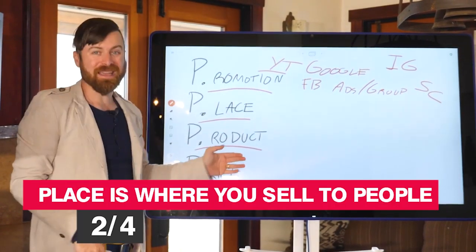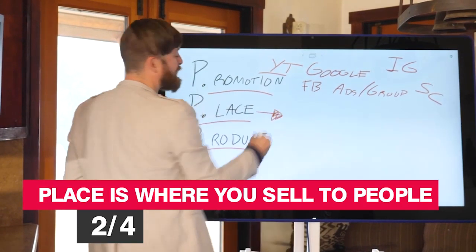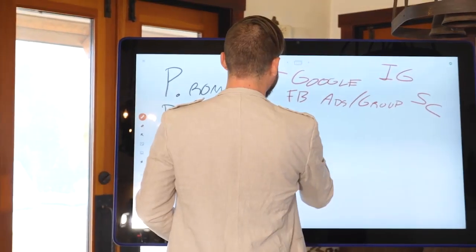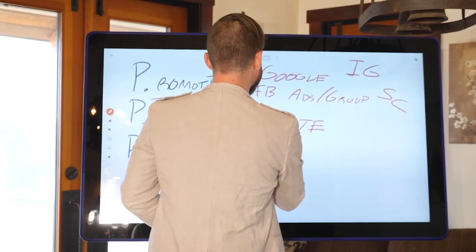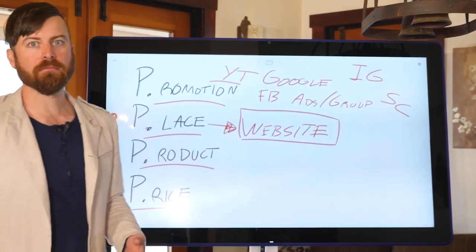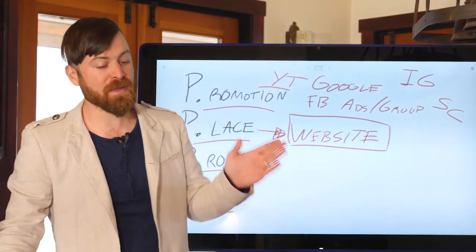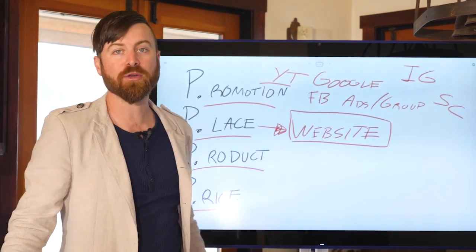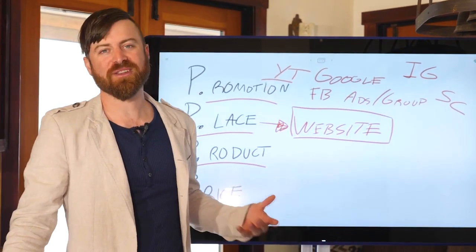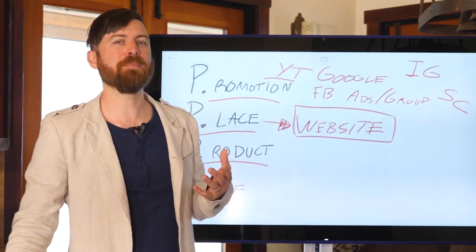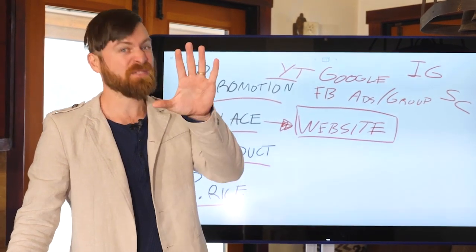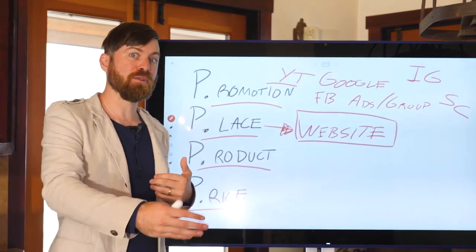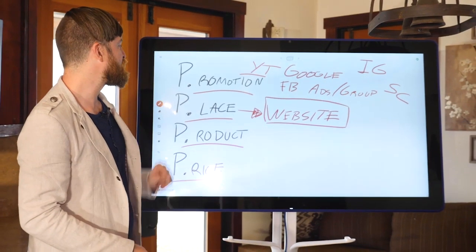The next P is place. Place is the place where you sell people. The place we sell people is a website. There's different ways of creating websites. You can create a landing page which is just meant to move people on. If you're blogging, your blog is going to show up on Google and people will click on it. There's a lot of ways to build a website. I have a video about how to build a website in just five minutes.